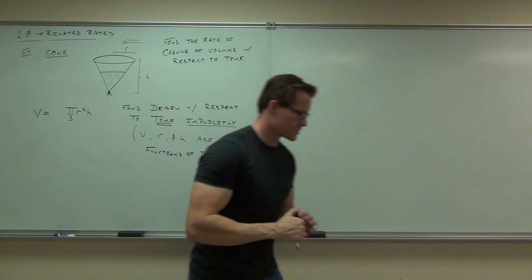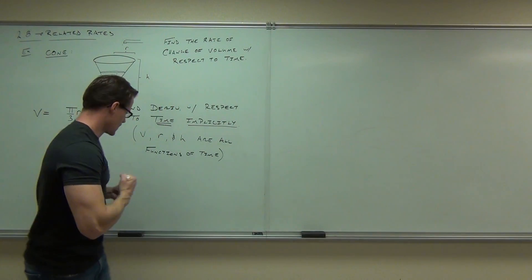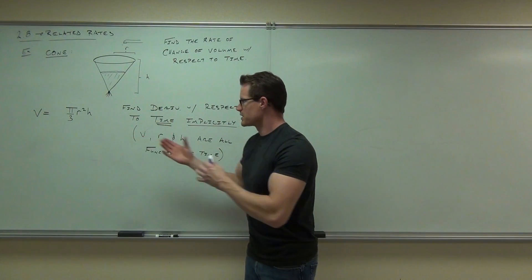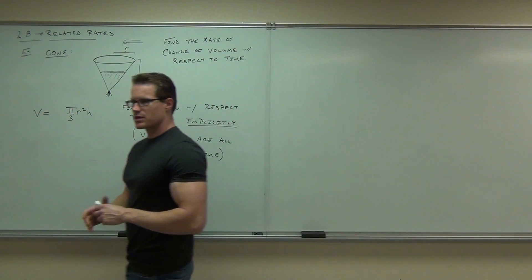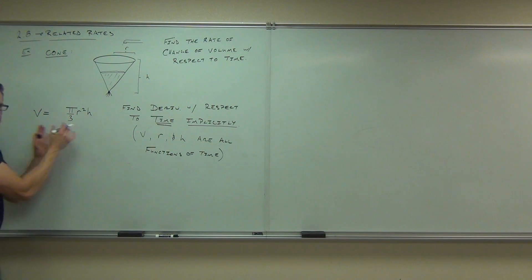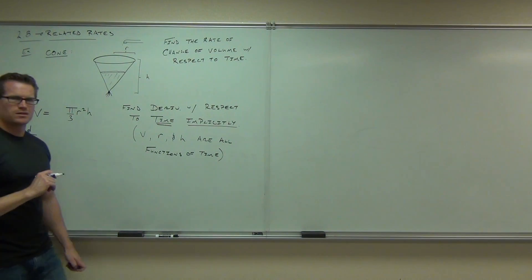So we're lucky that implicit differentiation was such a good lead in to this. So let's go ahead and do that. We'll take the derivative implicitly of both sides. So when we took an implicit derivative, we did a d, d something of both sides to start off with, right? So this would be a d, d, d, d, d what? T. Why T?